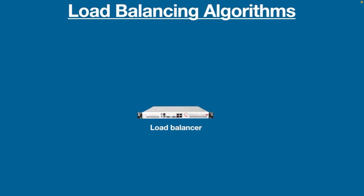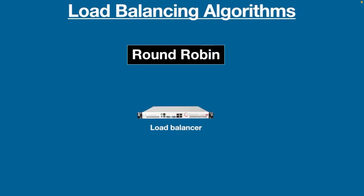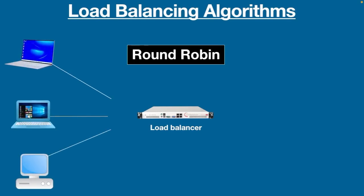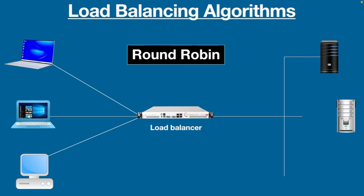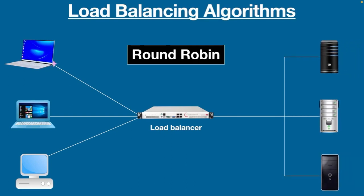Let's discuss them one by one. Round-Robin algorithm — this is the most common or default method and it works just as the name implies. The load balancer sends traffic to the list of servers in a rotating style or sequential order. For example, when the first request arrives, the load balancer sends it to the first available server. The second request goes to the second server, third goes to the third server.